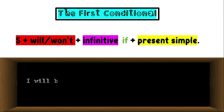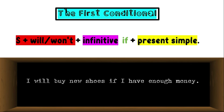For example: I will buy new shoes if I have enough money. Here, 'I will buy new shoes' is subject plus will plus infinitive, and 'if I have enough money' is the if clause at the end. In the previous sentence, we mentioned the if clause at the beginning. We can use both structures.